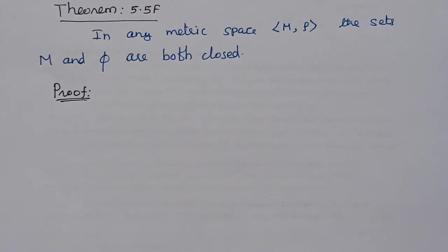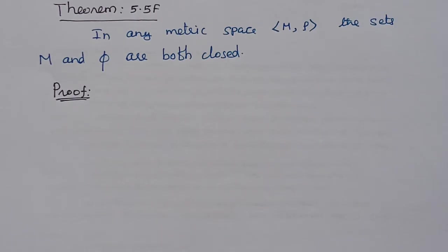In real analysis, based on the closed set theorem: in any metric space M, the sets M and the empty set are both closed. This is why we define open sets — the entire metric space M and the empty set are open, and we will prove it. Similarly, the entire metric space M and the empty set are closed, and we will prove it.